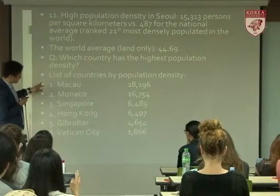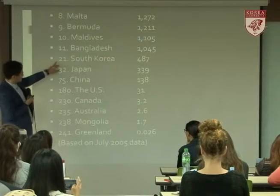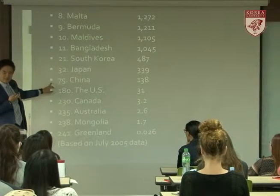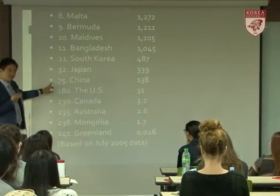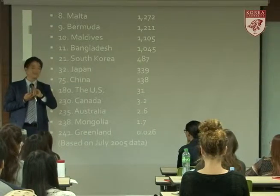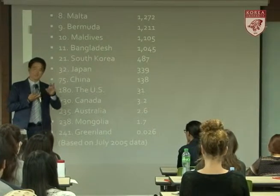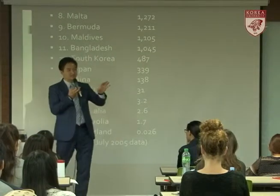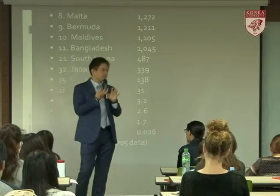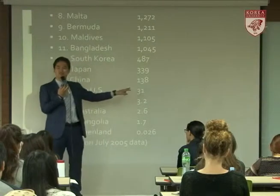Of course, you can't really call Macau a country. Then Bahrain and Malta. South Korea is ranked 21st. China's population is 1.3 billion — nearly 30 times that of Korea — and yet its population density is only 138 because the land is huge.